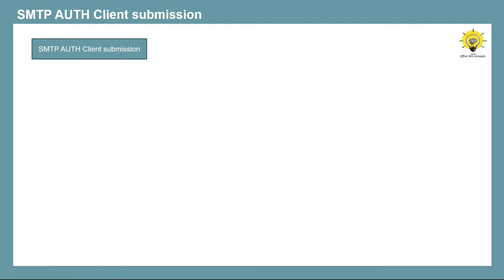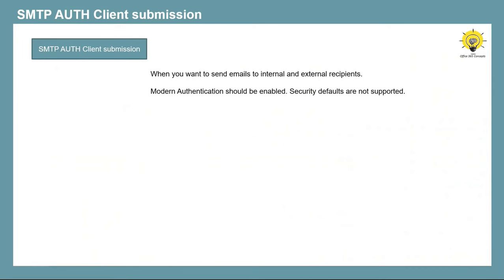Client Submission method is suitable when your requirement is to send emails to both internal and external users. If you want to use SMTP Auth Client Submission, you need to make sure that modern authentication is enabled for the account you want to use to send emails from your device. In SMTP Auth Client Submission, you cannot use the password of the mailbox account. You need to enable multi-factor authentication and create an app password for that account, which you will use to authenticate in your application or device. Security defaults are not supported in SMTP Auth Client Submission.